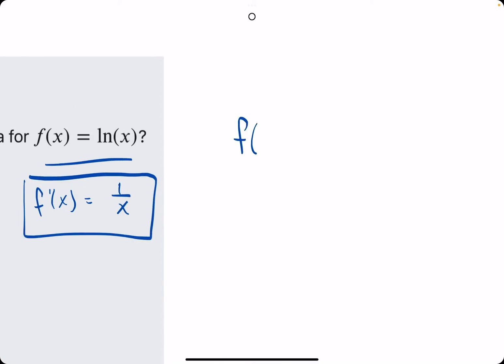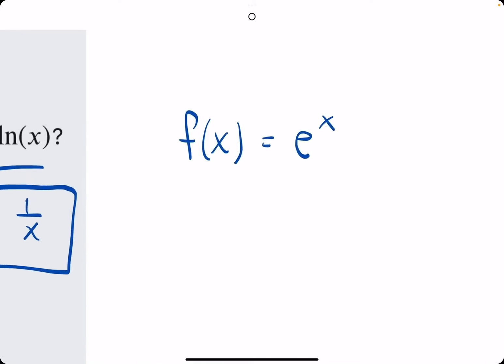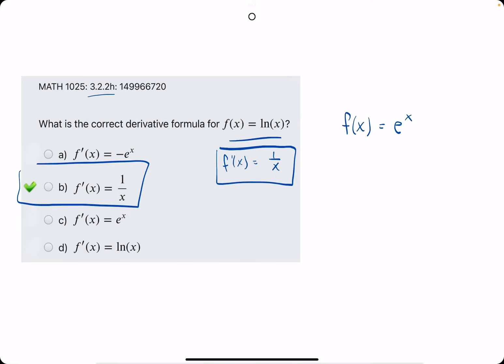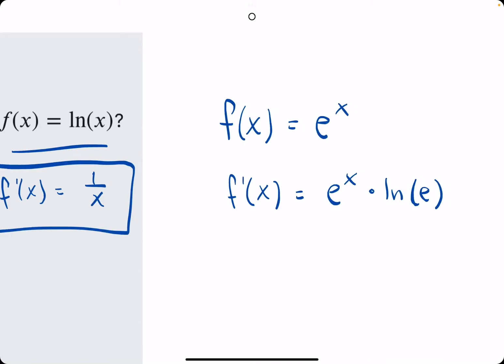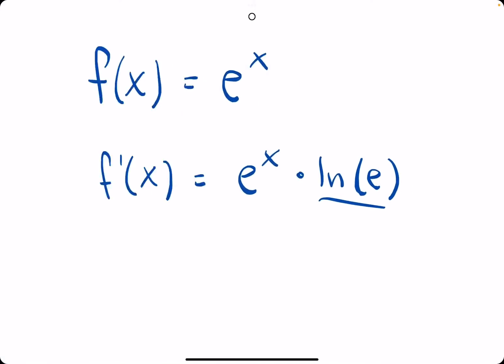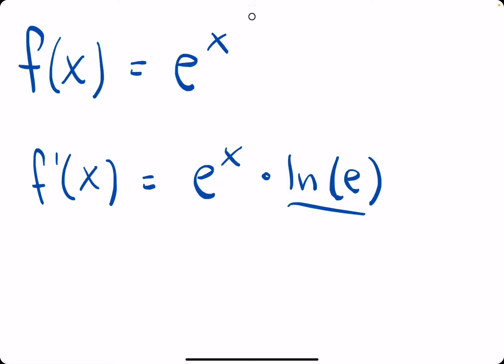Another function's derivative that is important to have memorized is the function e to the x. This matches the exponential form, so we could use the same rule we used in a previous video, where we would have e to the x times ln of e. But the nice thing about this is that the natural log of e is just 1.